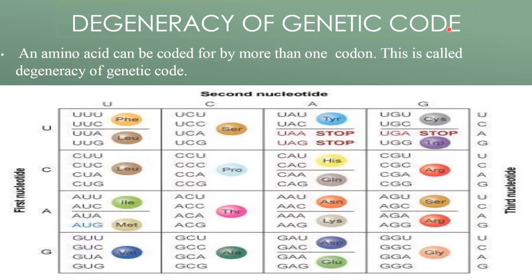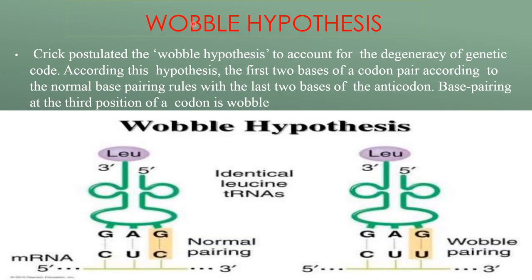Degeneracy of genetic code: an amino acid can be coded for by more than one codon. This is called the degeneracy of the genetic code. Crick postulated the wobble hypothesis to account for the degeneracy of genetic code.